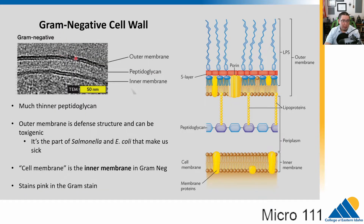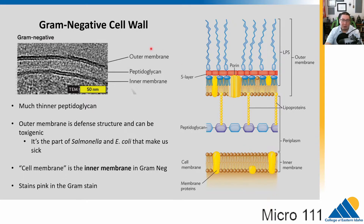Gram-negatives look different — they have two membranes and a thin layer of peptidoglycan. On the outside, they have toxic components called endotoxins, like LPS. This is the part that makes us so sick from things like E. coli and salmonella. The inner membrane is technically the cell membrane, most similar to the gram-positive cell membrane. The thin peptidoglycan layer is why gram-negatives stain pink: crystal violet goes in, the decolorizer (alcohol) washes it out, and then the safranin counter stain stains them pink.